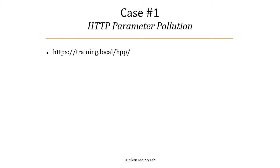As the name suggests, parameter pollution means we are going to send the same parameter many times in the request. The interesting question is how the web application is going to interpret this request. With a single occurrence of a parameter, it's easy. But with multiple occurrences of the same parameter, the question is what to do — should the app take the first or the last occurrence? That's a good question. We've got some ambiguity here.